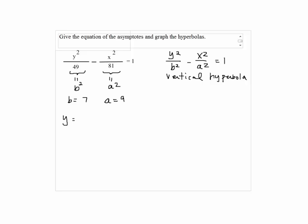The asymptotes equation will be given by y equals plus minus b over a, so it will be 7 over 9.